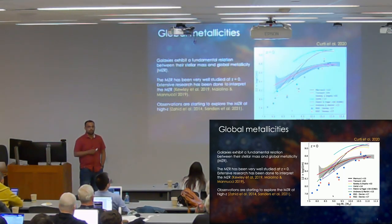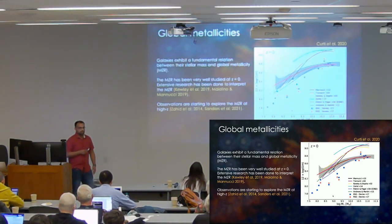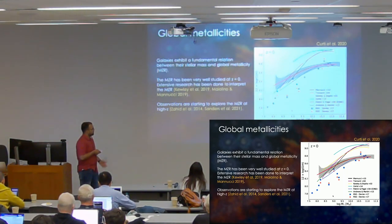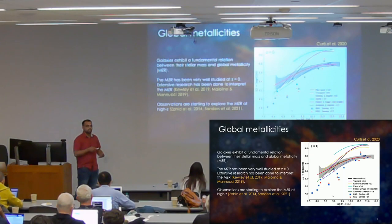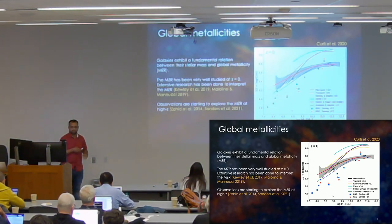We initially started looking at global metallicities, so getting one value of metallicity from integrated spectra of galaxies back in the SDSS days. And now we very well know that galaxies follow a mass-metallicity relation where low-mass galaxies are metal-poor as compared to more massive galaxies. We see this across redshifts, across galaxies, in the gas phase but also in the stars. And this has been very well studied in particular at redshift zero.